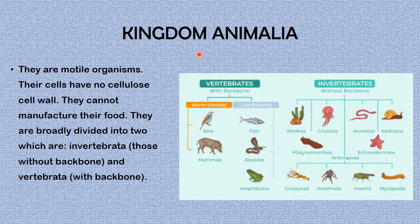Finally, we'll be looking at the last member of the five kingdoms: kingdom Animalia. Animals are motile organisms. Their cells have no cell wall. They cannot manufacture their own food — they are heterotrophic in nature. They are broadly divided into two groups: invertebrates and vertebrates.